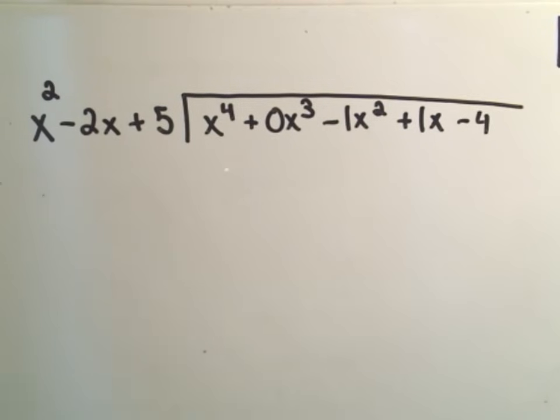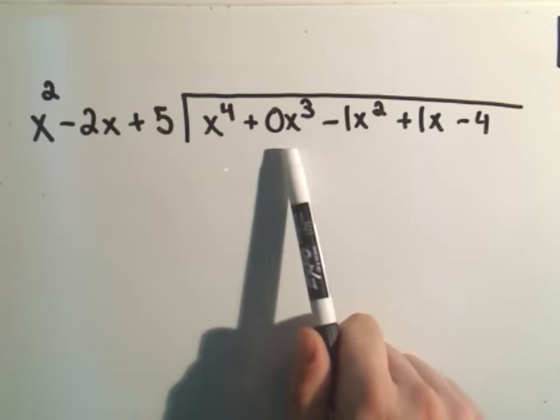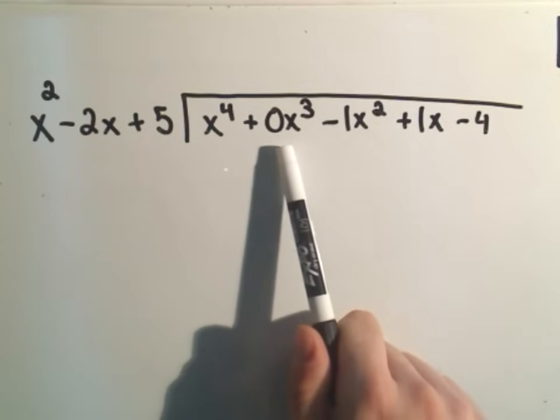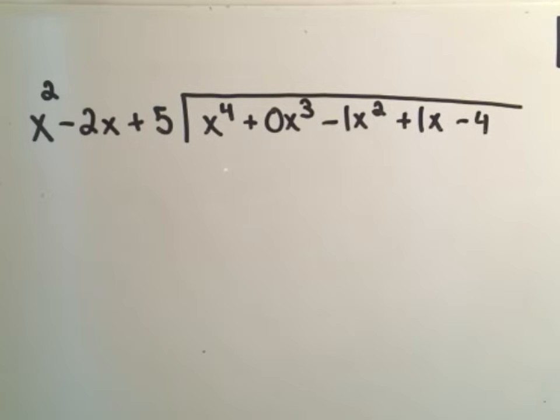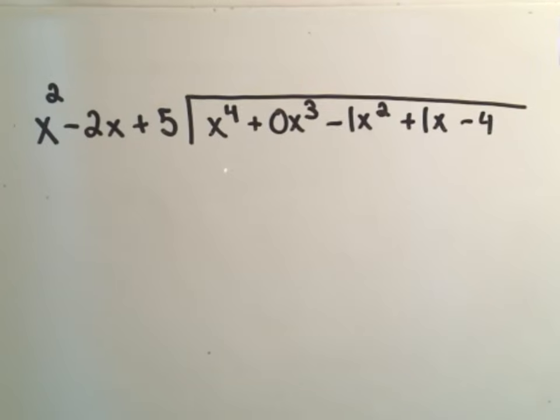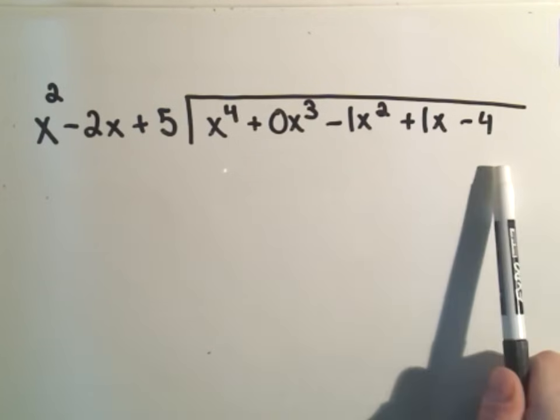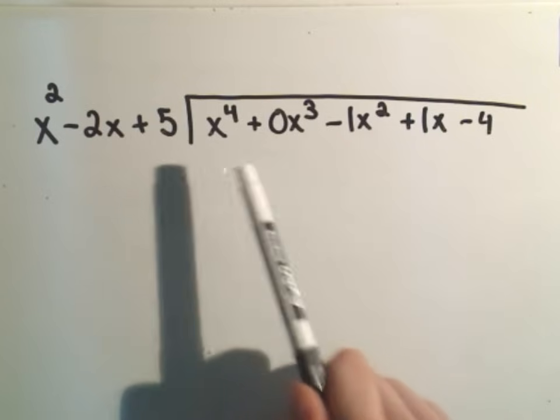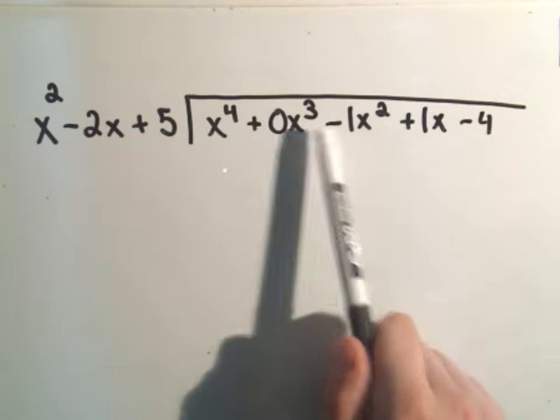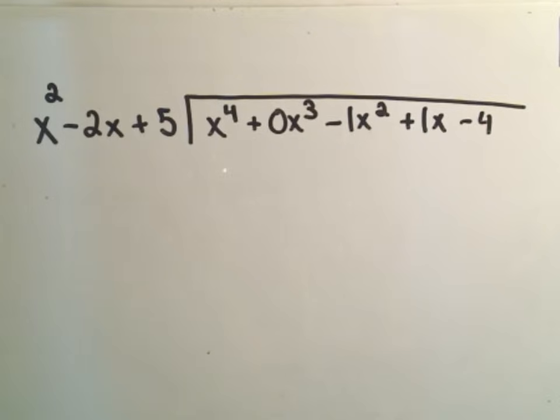Okay, so notice underneath there, even though there wasn't an x cubed term, I went ahead and filled in the 0x cubed just as a placeholder. All this is going to do is just help you keep things lined up. Notice also it's in descending order, so fourth power, third power, second power, first power, and our constant. Same thing on what we're dividing by on the outside.